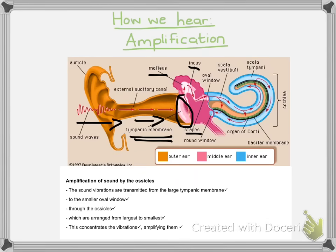Below the diagram I have included what a marking memo would look like — please take note of where the ticks are located. Once the sound has been amplified by the ossicles, you need to mention that it is transported to the oval window. Remember, we're not hearing yet — we are only amplifying the sound. Now we need to look at what goes on inside the cochlea, which is where hearing actually takes place.